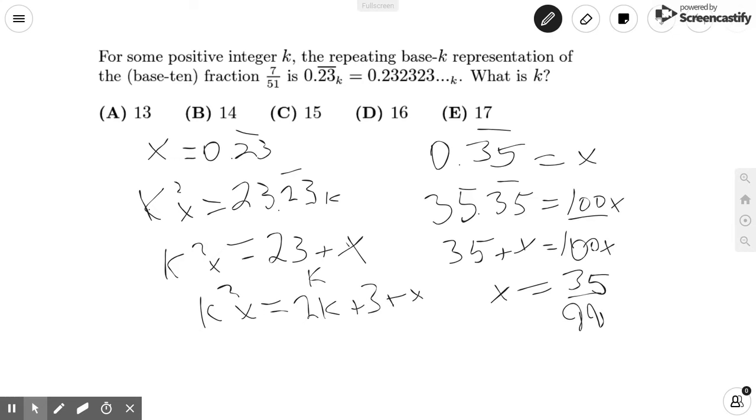And now we can actually get x alone, which is what we wanted to find in a base 10 number. And we get that x is going to be equal to 2k plus 3 over k squared minus 1.